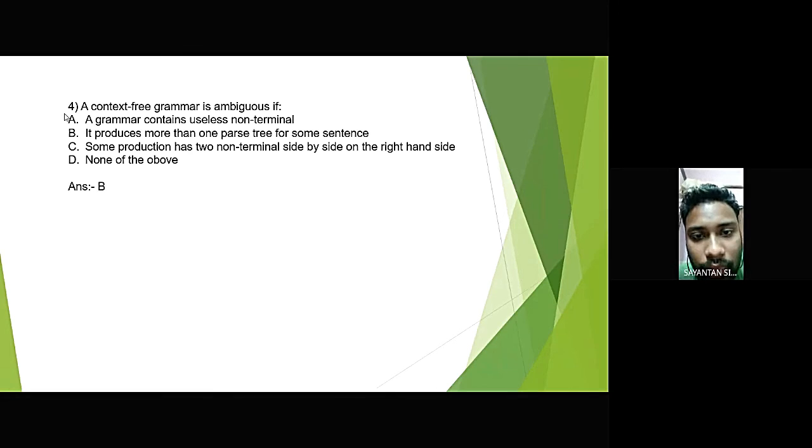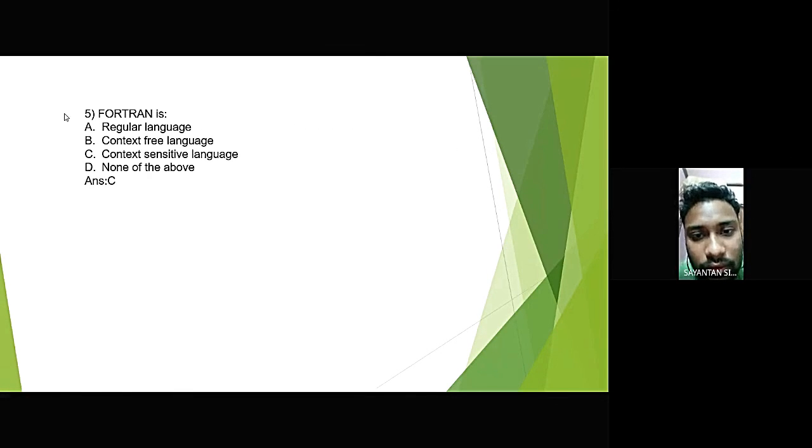For a context-free grammar is ambiguous. And the options are: a grammar contains useless non-terminal, false. It produces more than one parse-tree for some sentence. Yes. That is the answer. Some production has two non-terminals side-by-side on the right-hand side. No. None of the above. The answer is B.